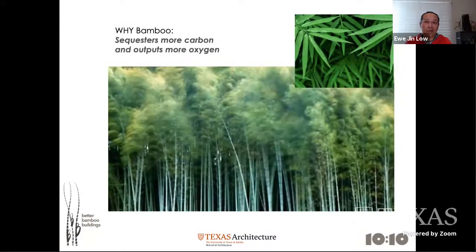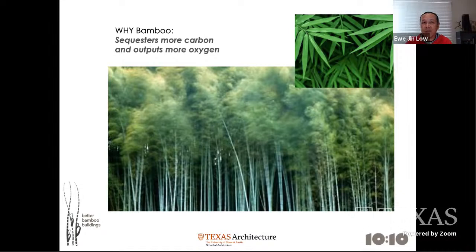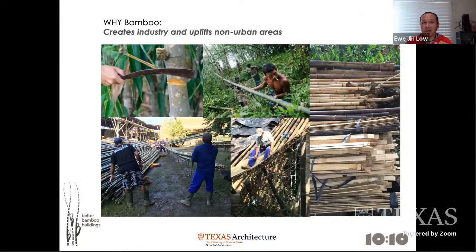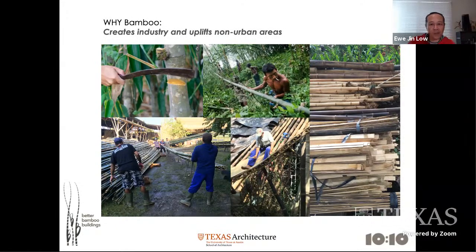Bamboo sequesters a lot more carbon than other building materials and outputs more oxygen as well — kilogram for kilogram compared to other materials. It is interesting that it holds more carbon and outputs more oxygen. Bamboo creates jobs not just in the building industry but all the way upstream and downstream — from harvesting, transporting to the factory, preparing, treating, and then construction. It's a whole industry that lifts up the poorer regions where bamboo grows.